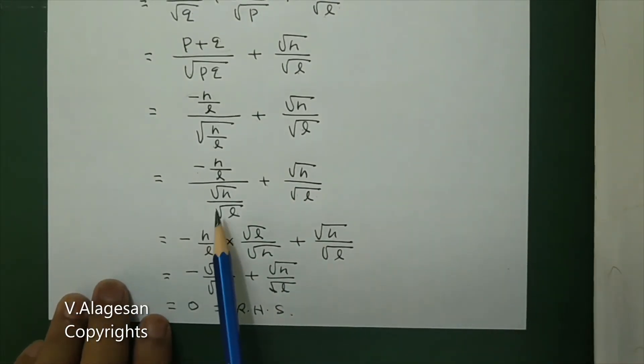Next, in the numerator update the denominator. The denominator -n/l in the denominator: division becomes multiplication by the reciprocal. So √n/√l × √l/√n plus √n/√l.